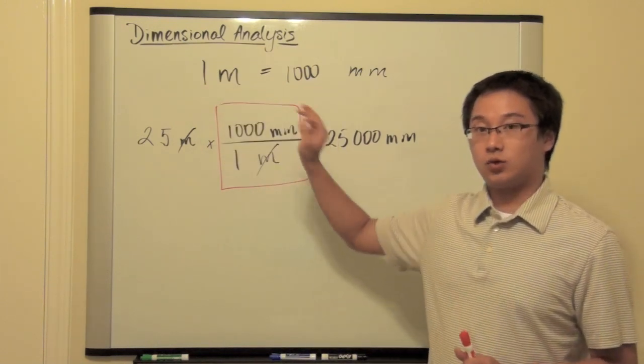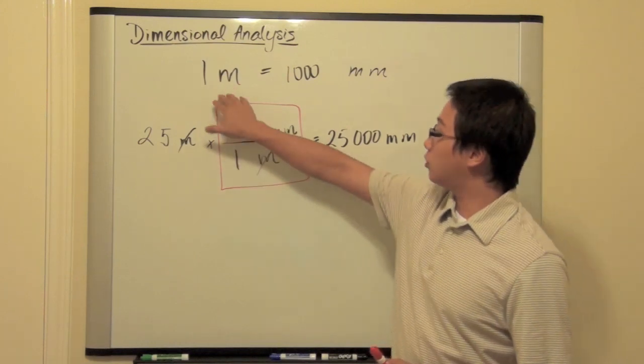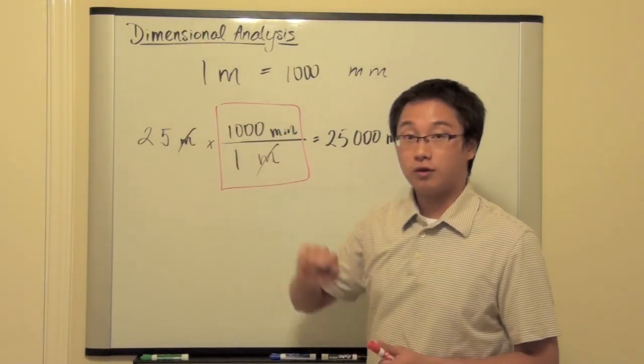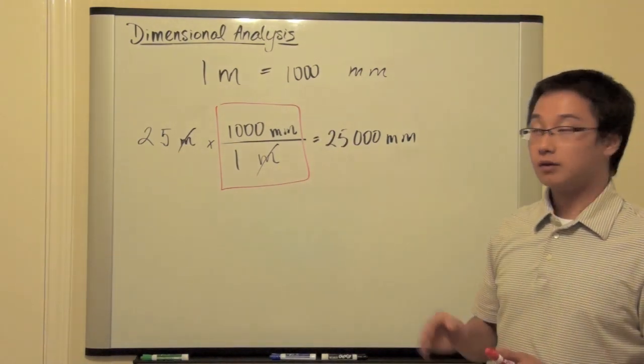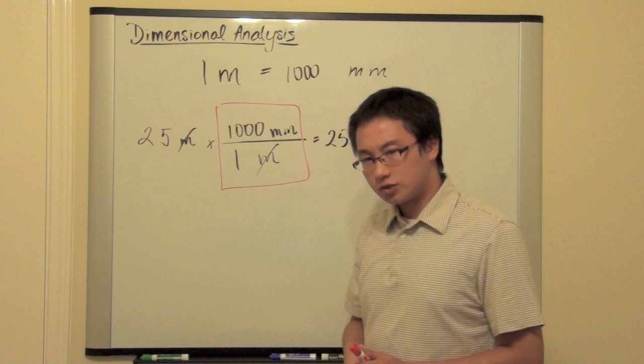One meter is equal to 1,000 millimeters. And if we use the same analogy, well, since we change from the 1 to 25, then it should be 25,000 millimeters. So, what's going on with this conversion factor?